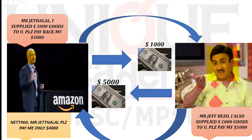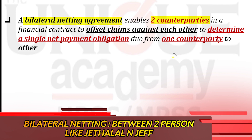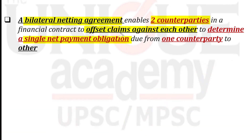Now imagine Jeff is your friend Jitalal — would you first give him $5,000 and then take back $1,000? That is not logical. In our college days, if a friend owed us ₹5,000 and we owed him ₹1,000, we would directly give him ₹4,000 rather than ₹5,000. This is what we call netting — you pay the remaining balance as a single claim. For example, Jitalal's claim was $1,000 and Jeff's claim was $5,000, so we convert it to a single payment of $4,000.